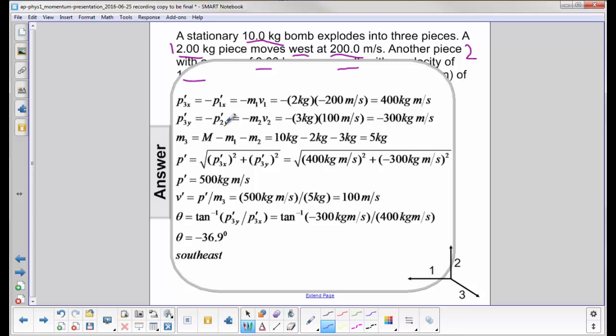The y momentum is the opposite of this one right here from particle two. So that's minus m2 v2. I put those numbers in and I get a negative 300 kilogram meters per second, which makes sense. That's your y component of this vector.